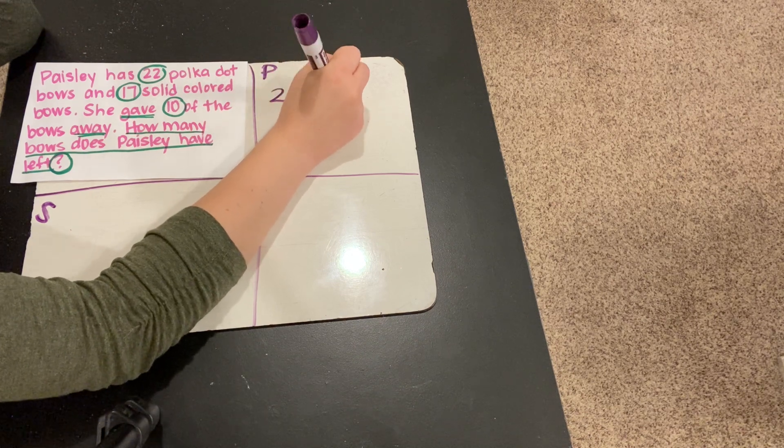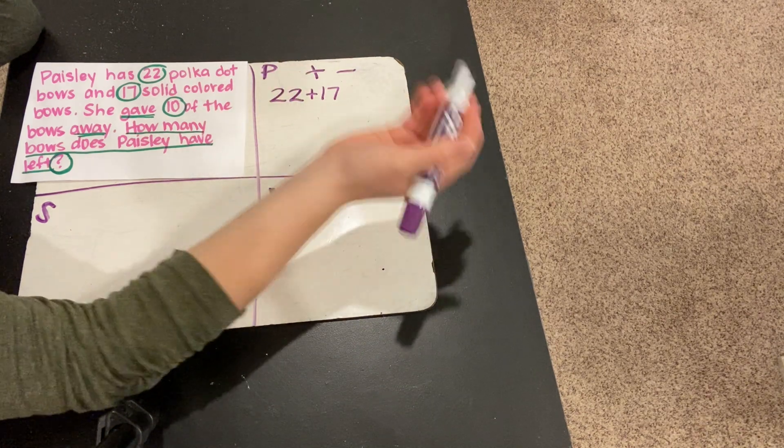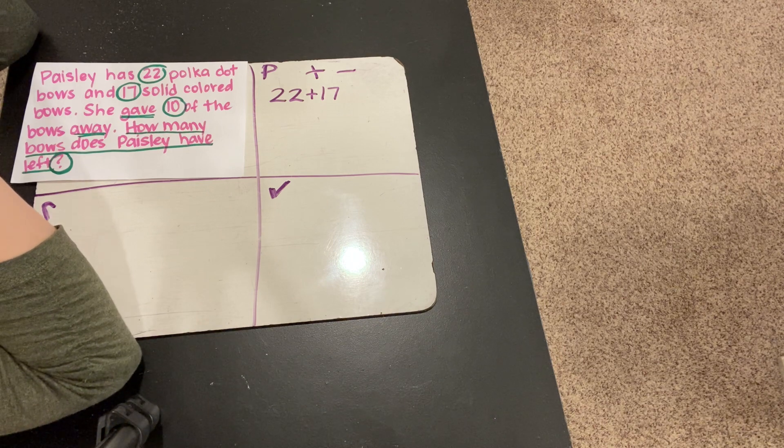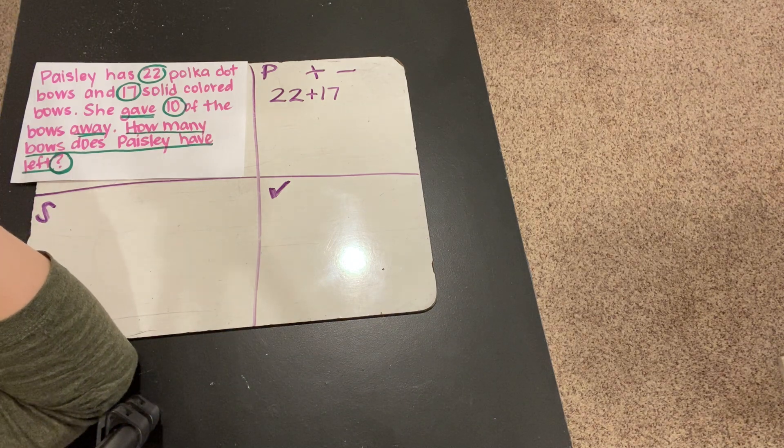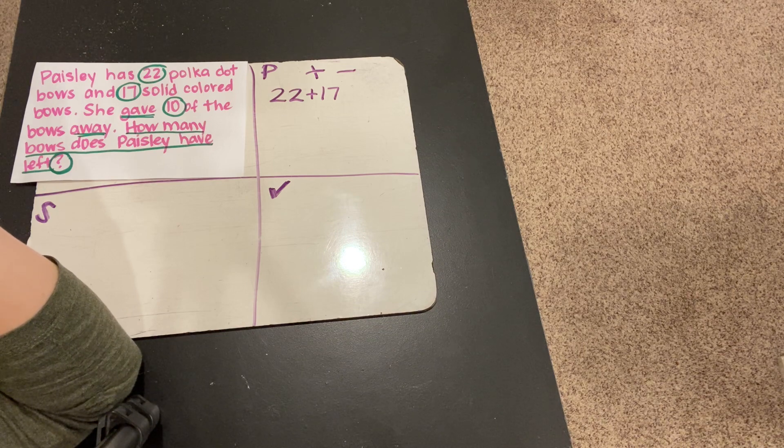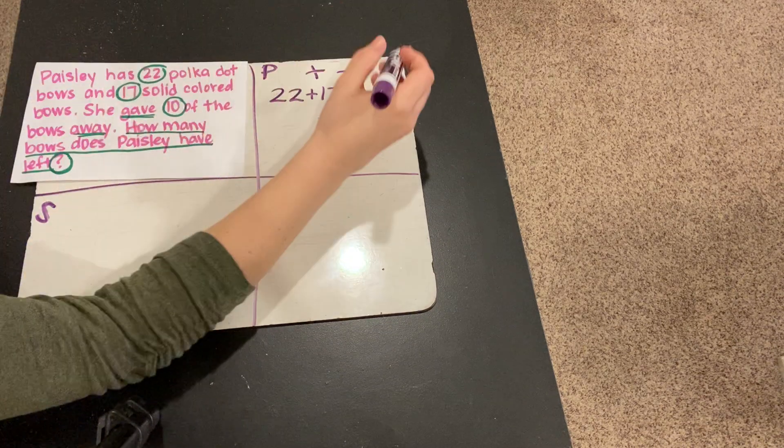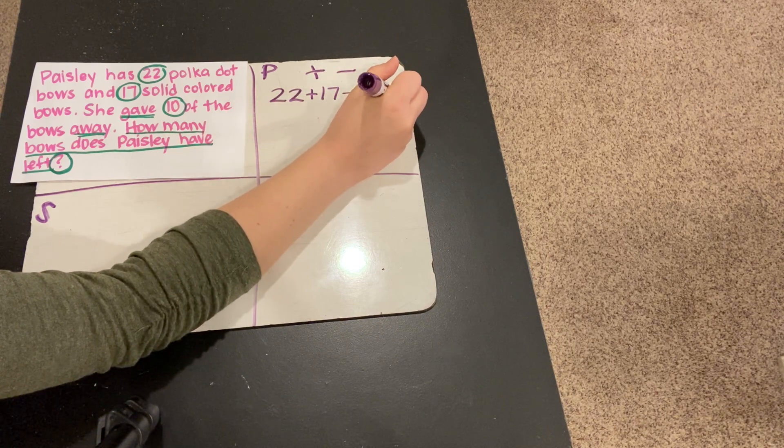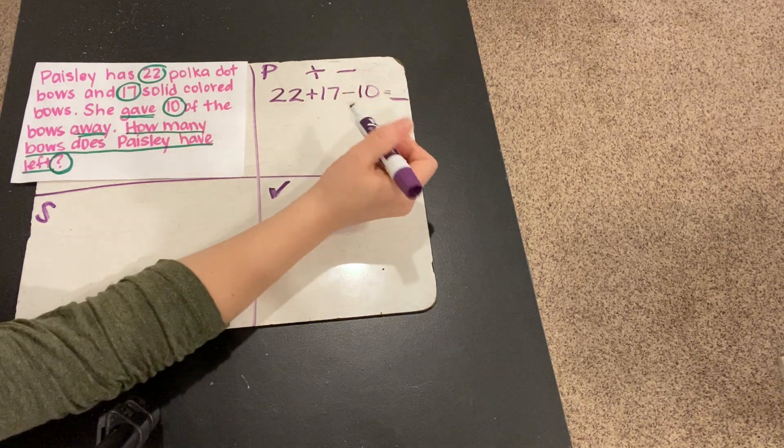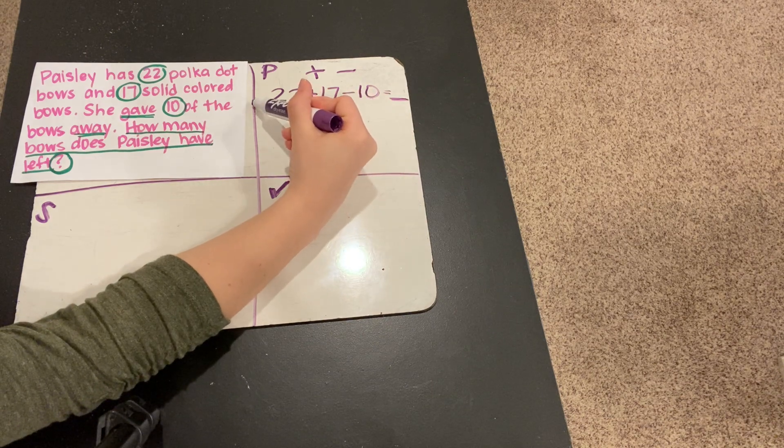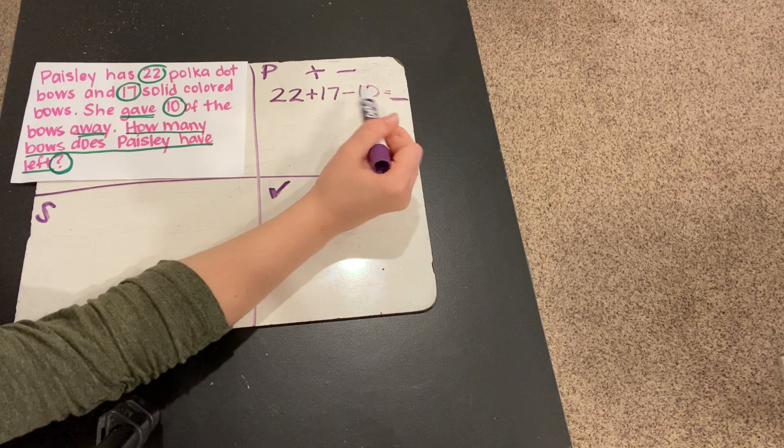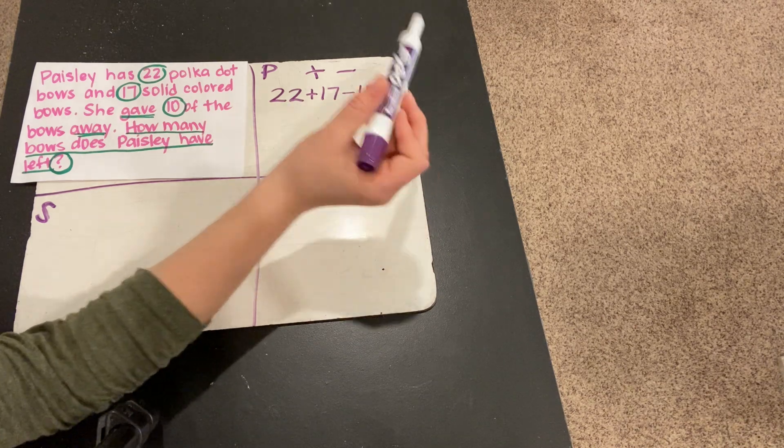We need to add them. So, 22 plus 17 and then she gave 10 of the bows away. If she's giving bows away, is that adding or subtracting? That's going to be subtracting. So, we'll do minus 10 equals, and we're going to solve this problem. We're going to do, just like you would read, we're going to solve from left to right since there is addition and subtraction. We'll do the addition first and then we'll subtract.